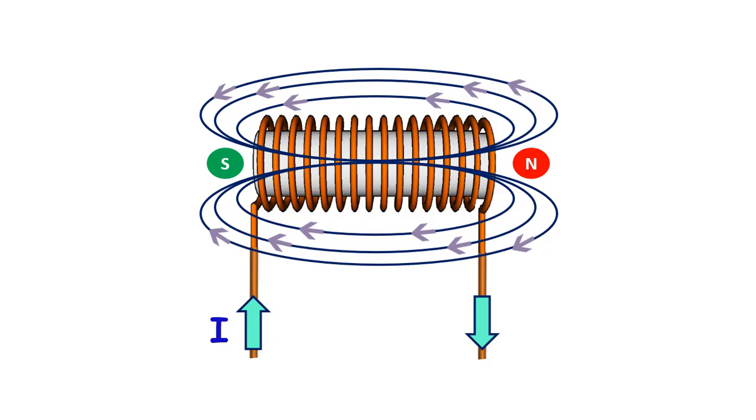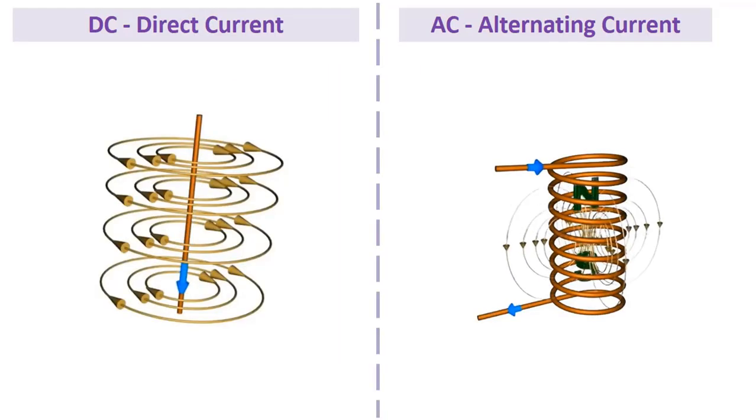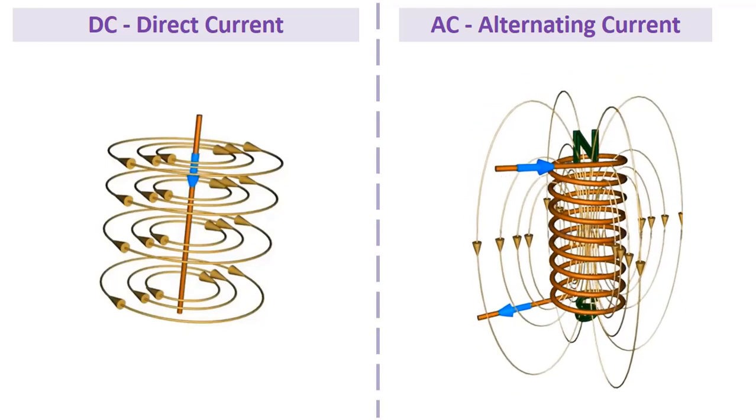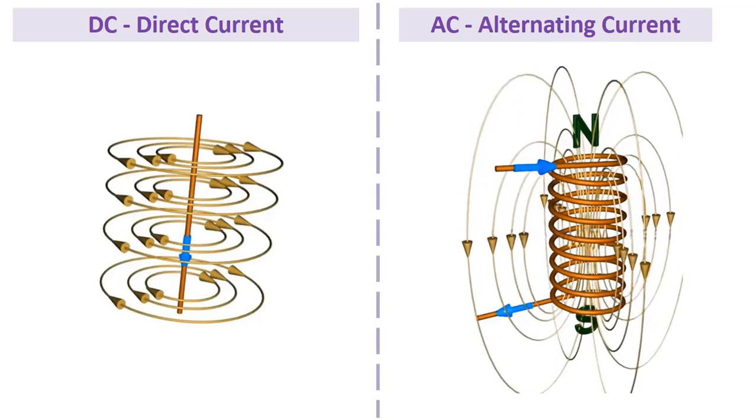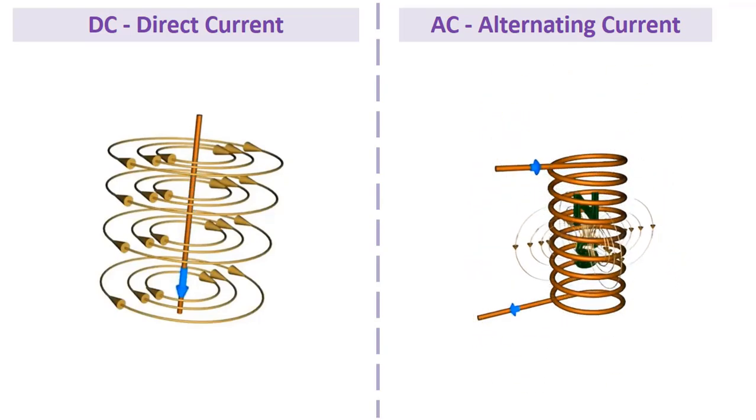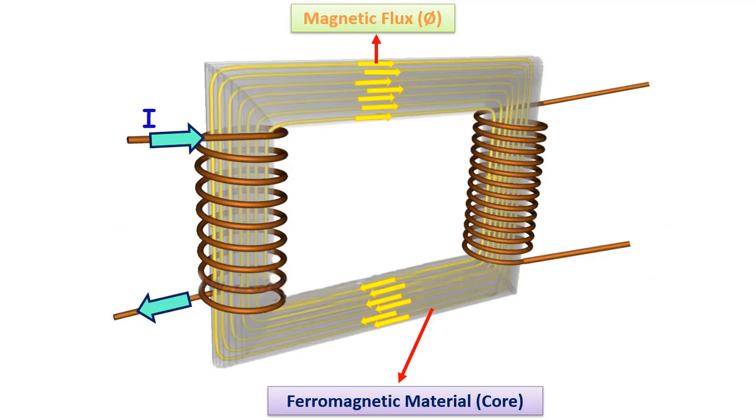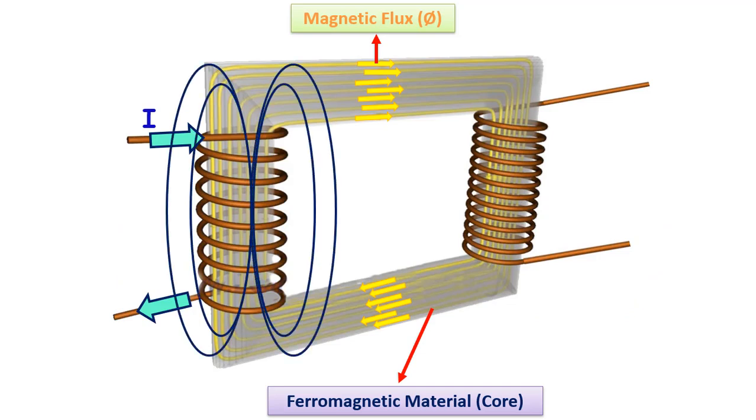Here, this electromagnet has north and south poles according to the direction of the current. While the current flowing through the conductor and the direction of the magnetic field are constant if it is direct current, the intensity and direction of the magnetic field is constantly changing if it is alternating current. When we wind these two electromagnet coils on an iron core and place them close to each other, a transformer is formed.